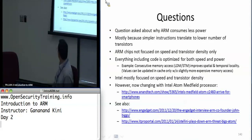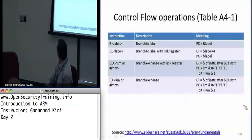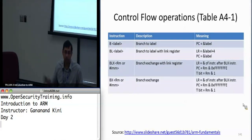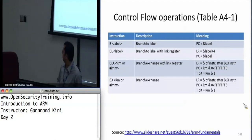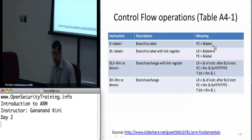I wanted to go into a little more detail on branching and the difference between mode changes. I mentioned yesterday that in the ATPCS manual included in your references, it says you can actually initiate a mode change by setting the least significant bit of the address you want to branch to. So every time you say a branch label, the PC just gets assigned the address of that label, which causes a branch to occur.